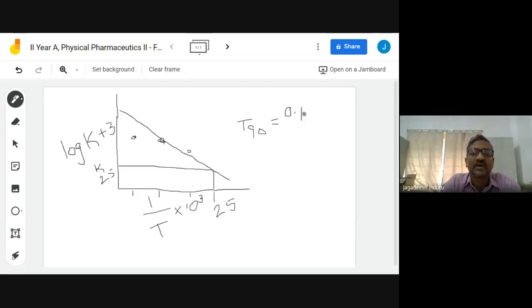0.105 divided by k. By using this you can calculate the t90, you are predicted for the room temperature.